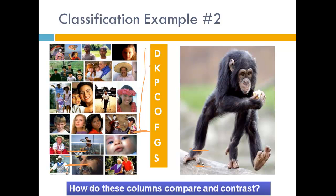So that's a brief introduction to how we can classify living things: first, based on phylogenetic trees, and second, based on taxonomic levels. Thanks for listening.